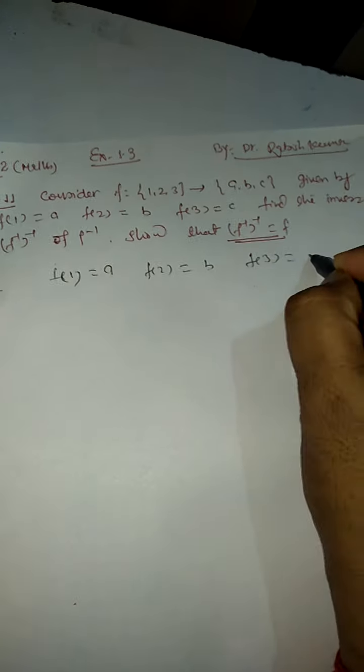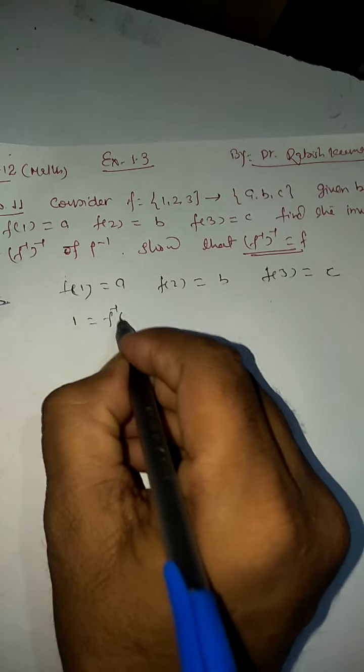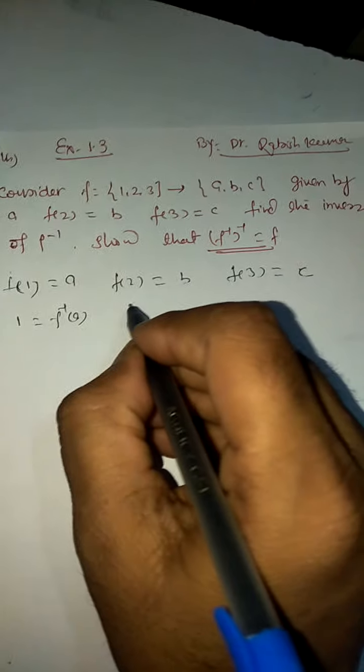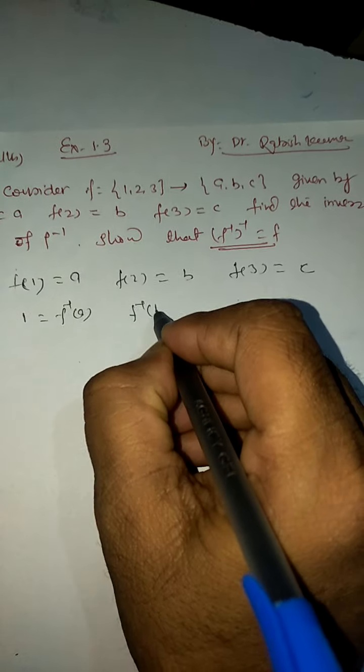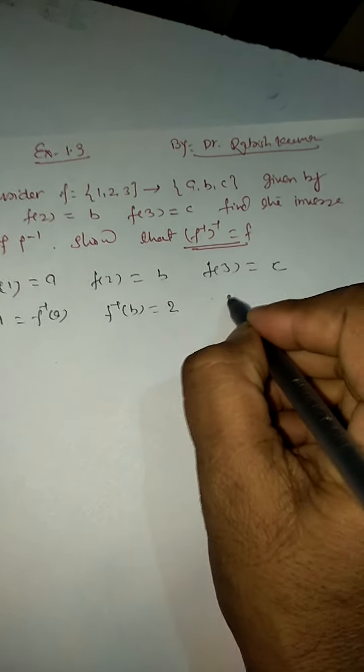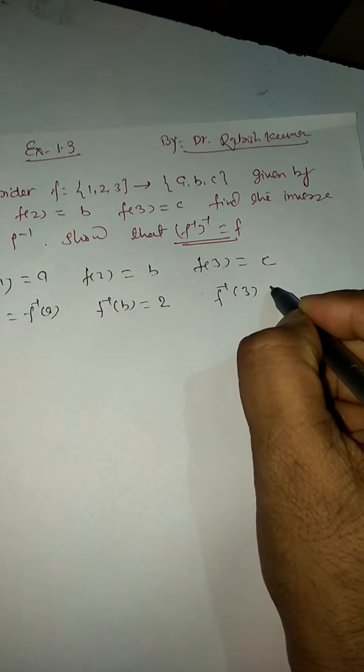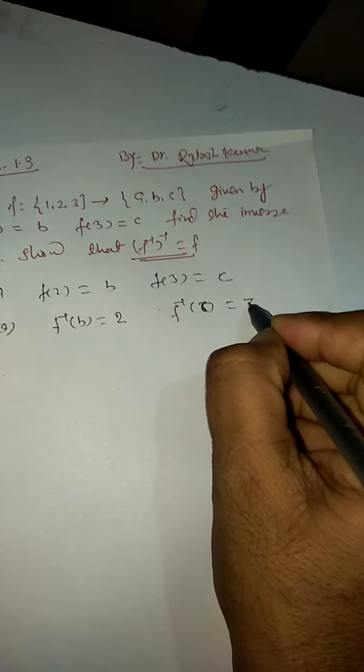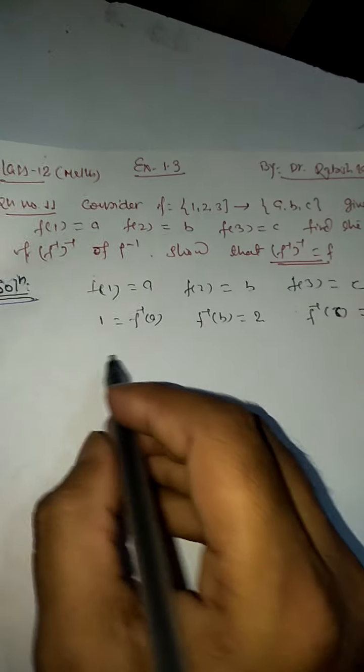To find the inverse, f inverse of a will be 1. We can also write it as f inverse of b, which will be 2. If we find f inverse of c, it will be 3. This is how we can find it.